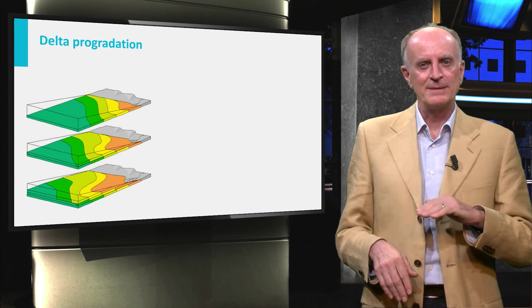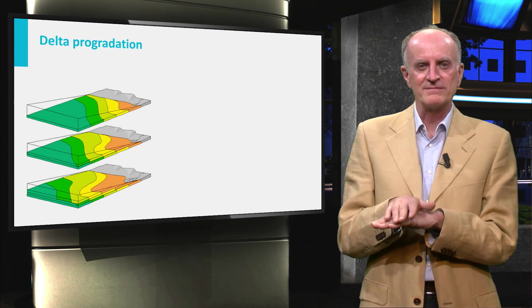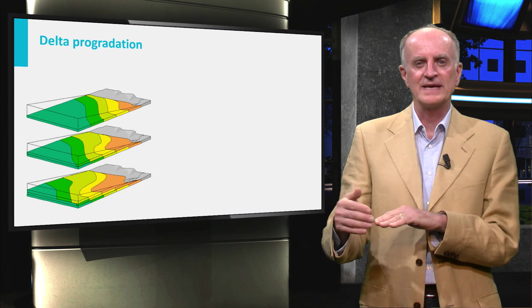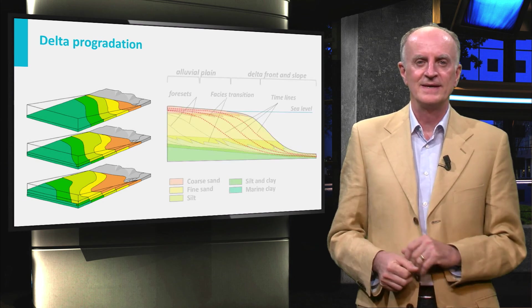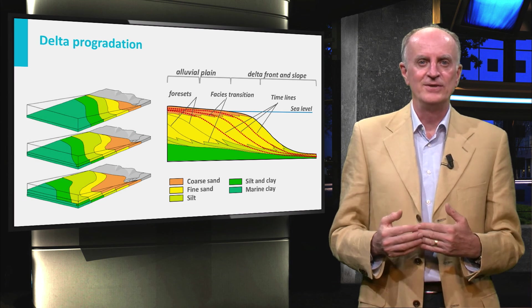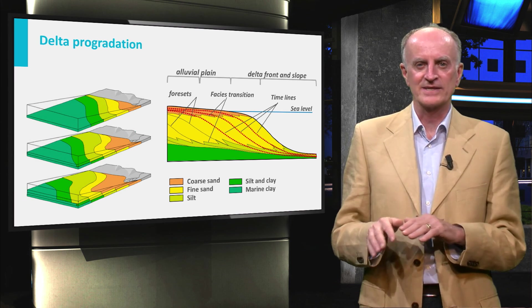As the incoming sediment cannot be stored above sea level, it will be transported and dumped in front of the delta slope. In a vertical section, you can see the results of such delta growth.